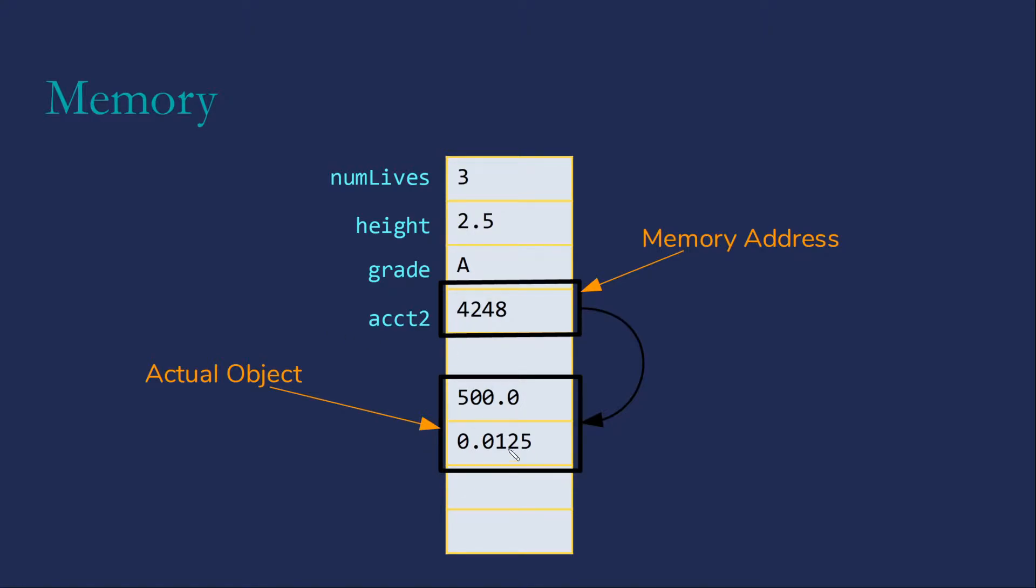The account2 variable contains a memory address which is the address for an actual object that contains the data for the account. That's always the case with references. When we try to access account2 it will immediately send us off to see the data in account2.